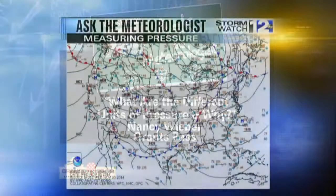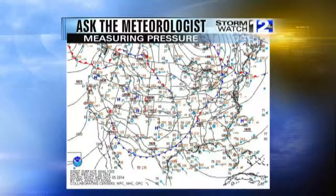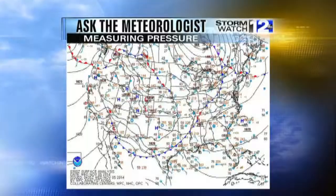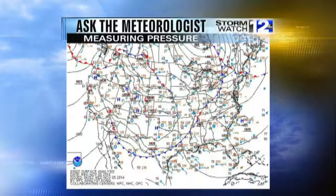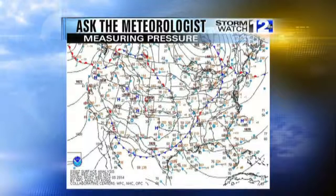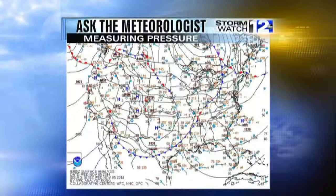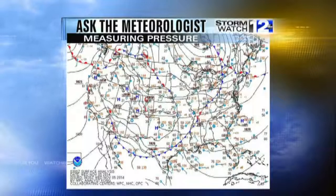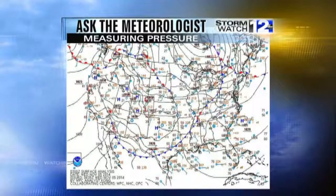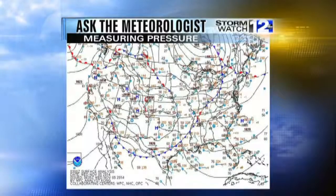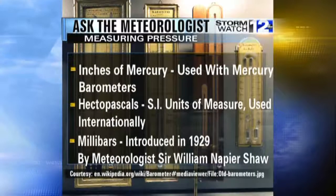So Nancy from Grants Pass, a very good question. One of the ways we use pressure is especially important on surface maps. This is a surface analysis of the United States — this was just yesterday's surface analysis, and this would actually be the forecast for the surface analysis. You can see the cold fronts on there, the stationary fronts, those highs and lows. And if you look very carefully, you can see some numbers next to those highs and lows — it'll say 1023 or 1039. Well, those are surface pressures given in millibars, and millibars are just one way that we use to measure pressure.